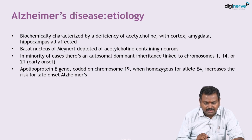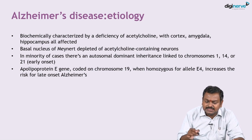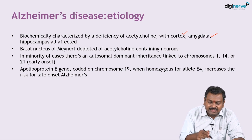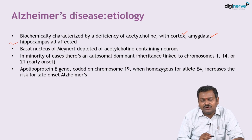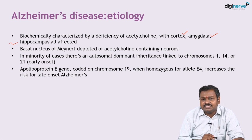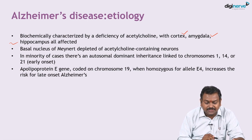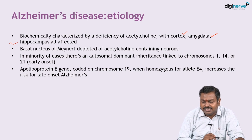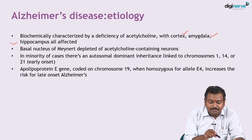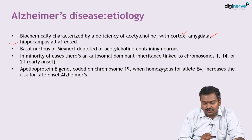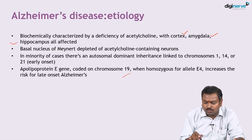Biochemically, the characteristic deficiency of acetylcholine occurs in the cortex, the amygdala, and the hippocampus. The basal nucleus of Meynert is depleted of acetylcholine-containing neurons. In a minority of patients, there is autosomal dominant inheritance, which can present with early onset Alzheimer's. There is also an apolipoprotein E gene coded on chromosome 19.